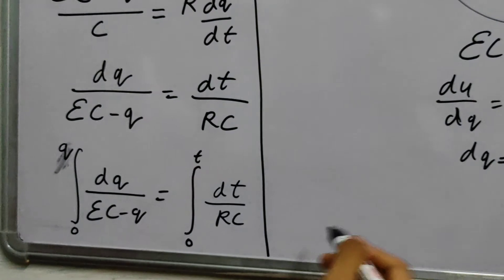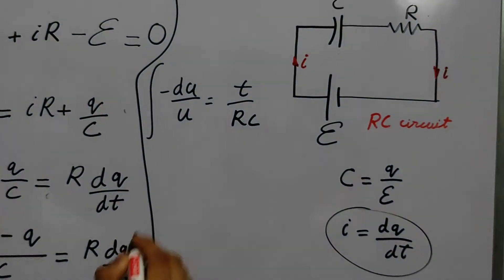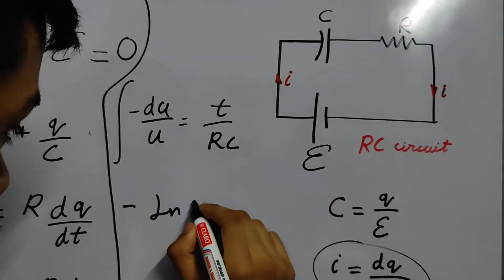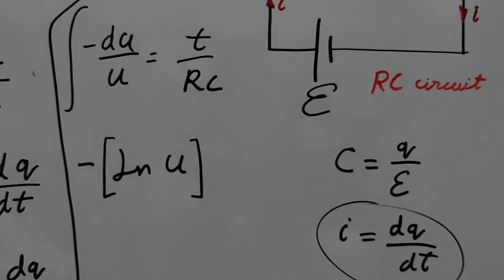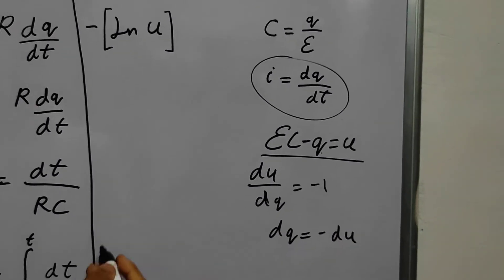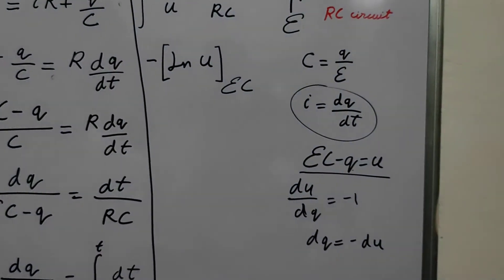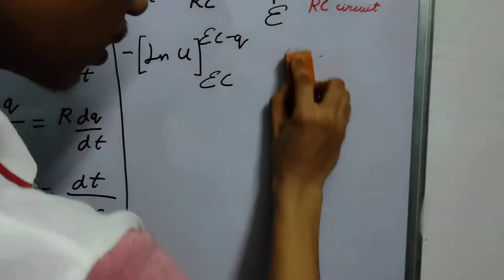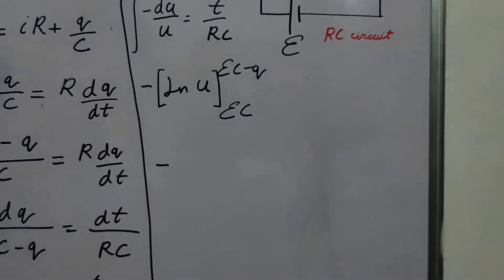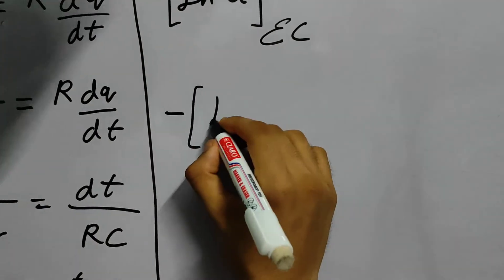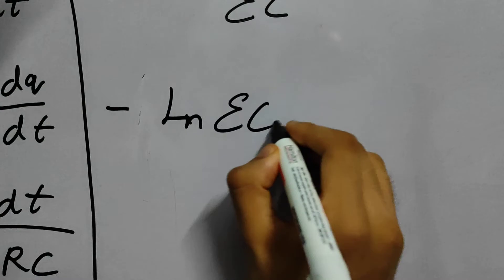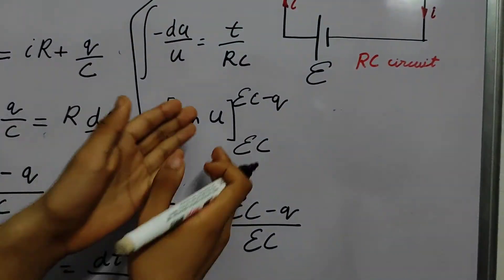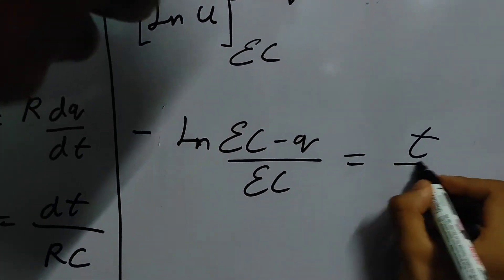This becomes minus LN, the base of natural log. So log of base E is known as LN, of U. What will be the limits? When Q becomes 0, from this, when Q becomes 0, this will become EC. And when Q becomes Q, it will become EC minus Q. So we can say, using our properties of log, that it is nothing but LN EC minus Q by EC. Because we can expand this logarithm. And then using the properties of log, we can say log A minus log B is nothing but log A by B. This becomes T by RC.